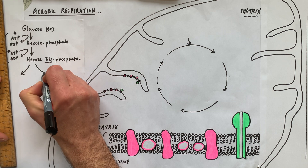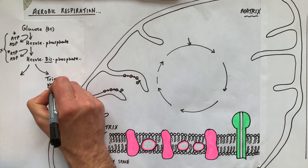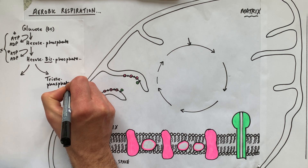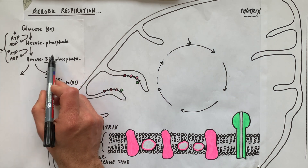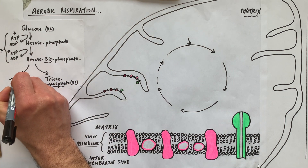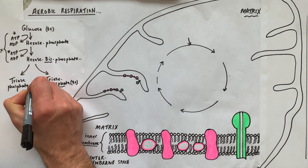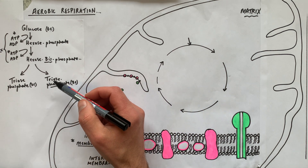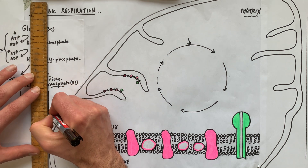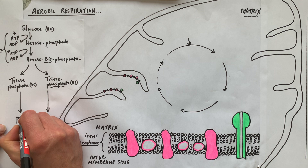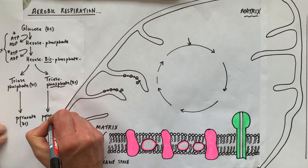Because hexose bisphosphate is unstable, it splits into two three-carbon molecules called triose phosphate. We get two triose phosphates per glucose. Each of them undergoes a reaction to form pyruvate, and this is the important step because there are two reactions going on here.